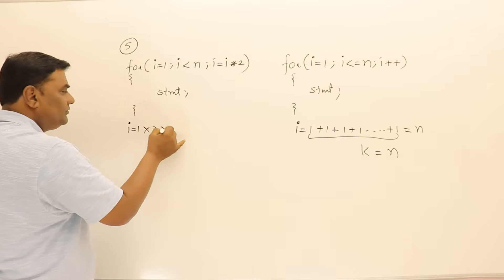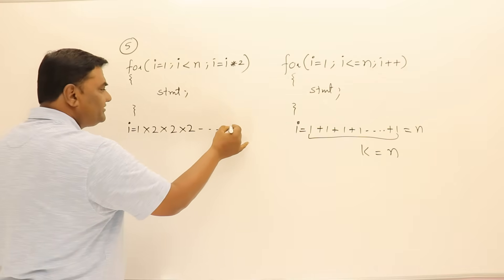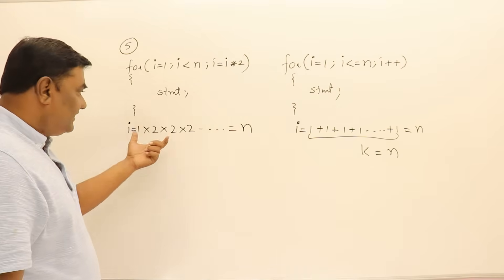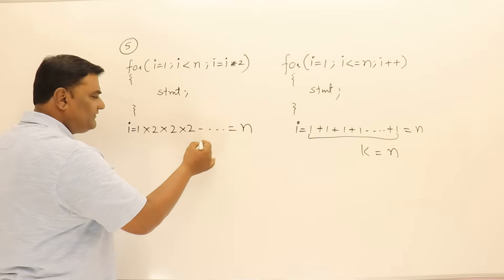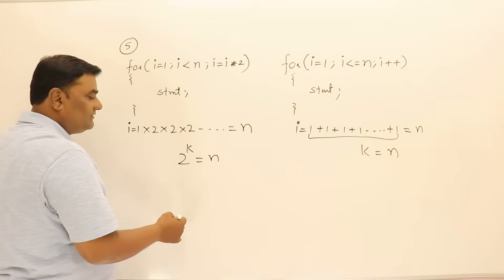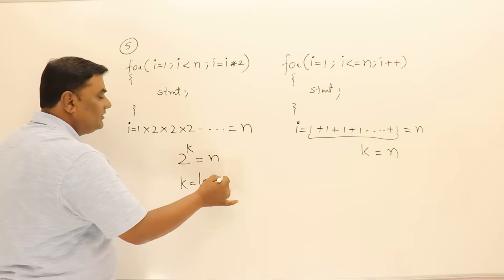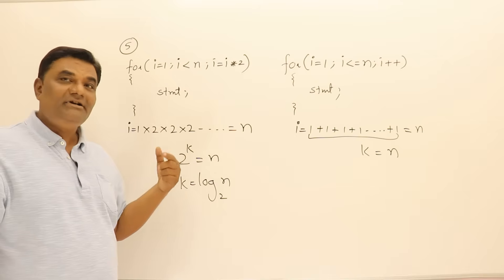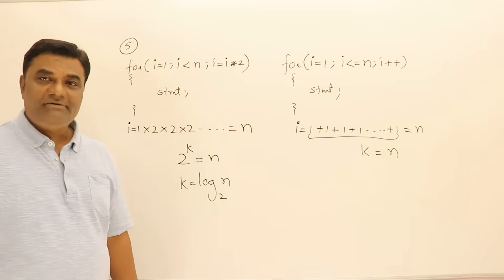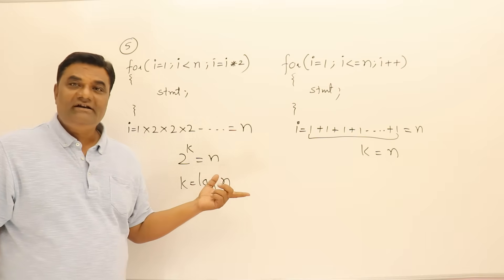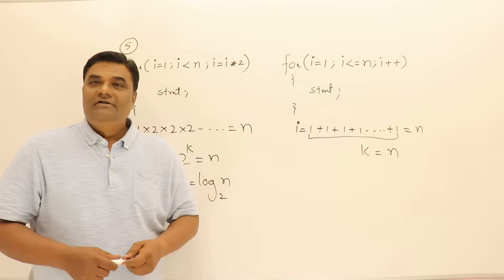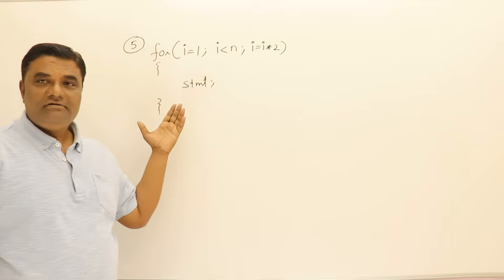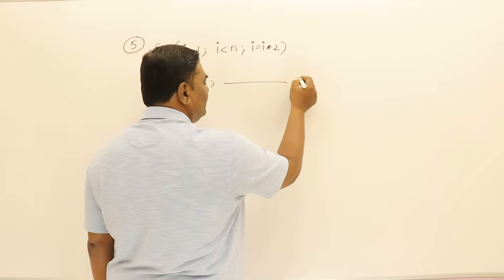Now for the multiplicative loop: i starts at 1, then multiplied by 2, then again by 2, and so on until it exceeds n. This repeats k times, giving 2 power k equal to n, so k equals log n base 2. So if any loop multiplies i by 2 each time, it takes log n time — you can take this as a formula. The time complexity is O(log n).